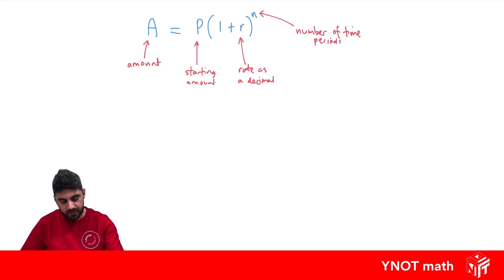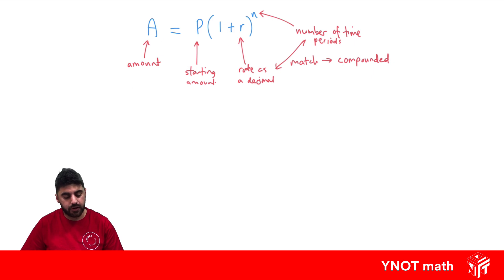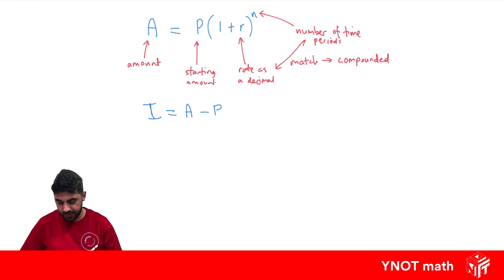Just like in simple interest, your rate and number of time periods have to match, but they also have to match the compounded time. In the question you'll be told how often the interest is compounded, and both the rate and the time period have to match that compounded time. You'll also notice that in compound interest you get A equals the final amount — not I — so compound interest gives you the final amount. If you want the interest, that's going to be the final amount minus the starting amount.